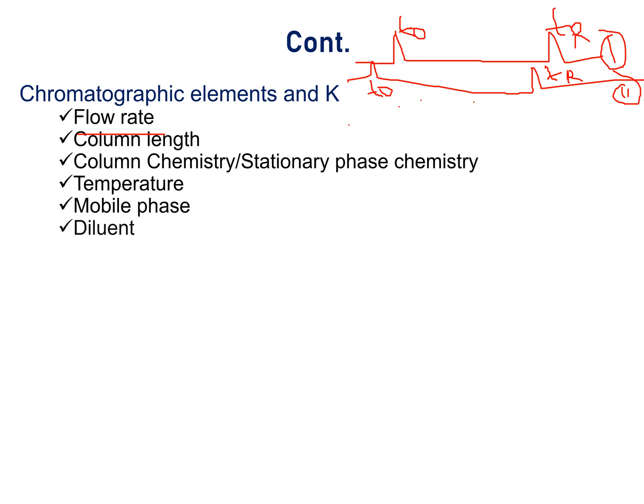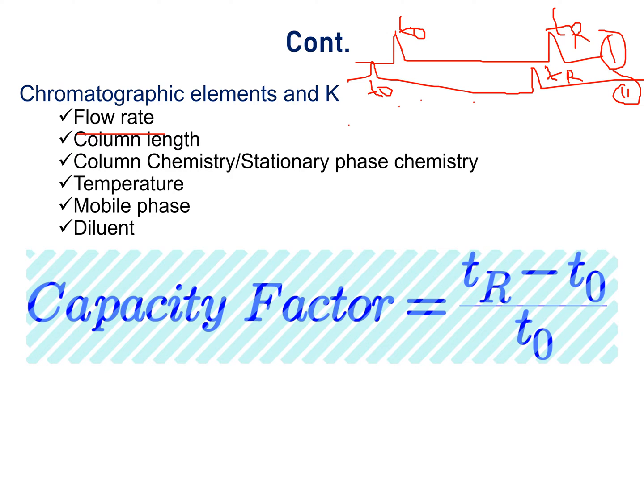But finally, capacity factor K, which is Tr minus T0 divided by T0, will remain the same in each condition 1 and 2. Hence, we can say that capacity factor is not affected by flow rate of the mobile phase.